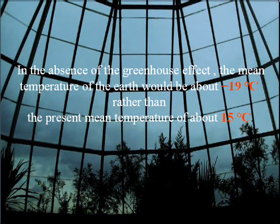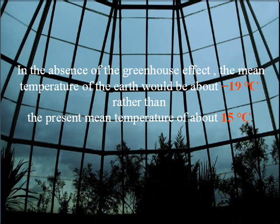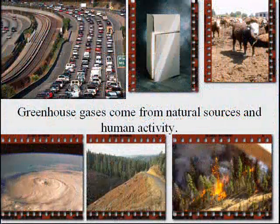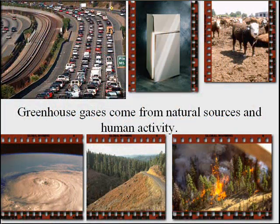Greenhouse gases are components of the atmosphere that contribute to the greenhouse effect. Without the greenhouse effect, the Earth would be uninhabitable. In its absence, the mean temperature of the Earth would be about minus 19 Celsius degrees, rather than the present mean temperature of about 15 Celsius degrees. Greenhouse gases come from natural sources and human activity.